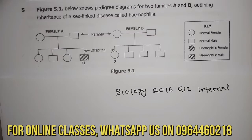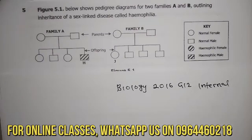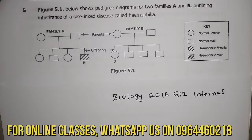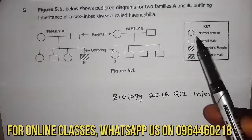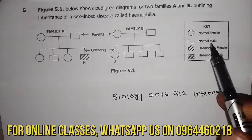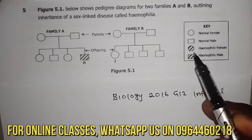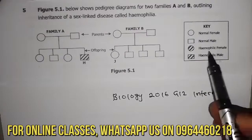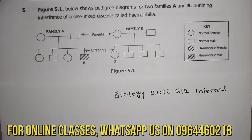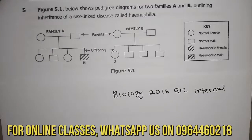Now let us dive into this. You have two families, A and B, and there is a key to guide us on how to analyze this question. The key is as follows: a white circle is a normal female, a white rectangle is a normal male, a striped circle is a hemophilic female, and a striped rectangle is a hemophilic male.